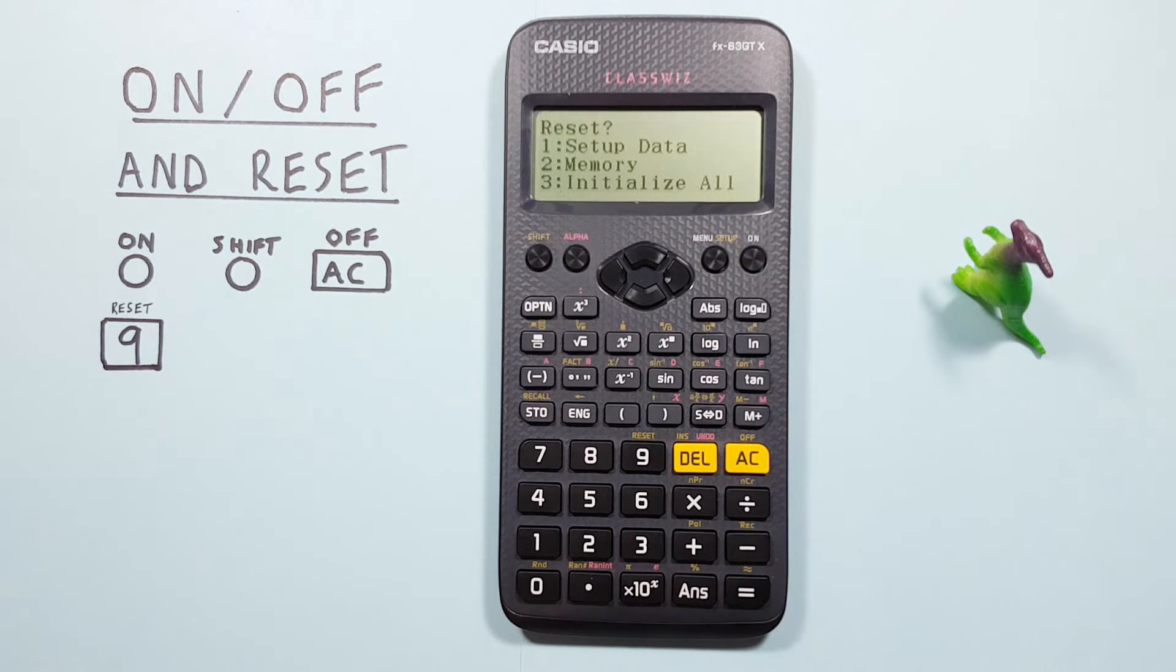Option 1 is the setup data, which is your settings - is it set to degrees, radians, that kind of thing. So if you're getting weird results, that'll probably be the one you want to reset.